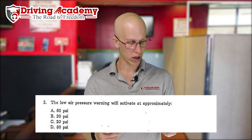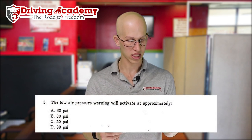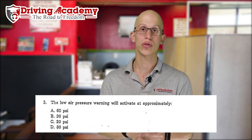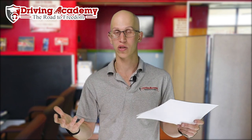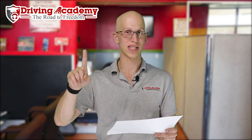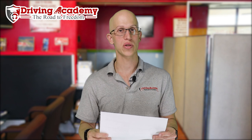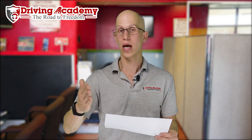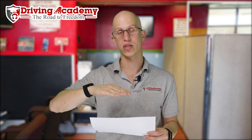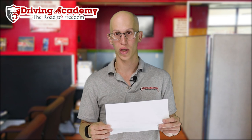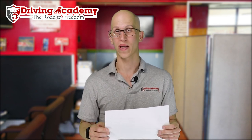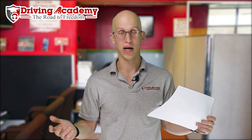Number three: the low air pressure warning will activate at approximately — the correct answer is A — 60 PSI. This is part of your in-cab inspection and air brake test to make sure your air brake system is working properly. Once your air pressure gets to 60 PSI, there's supposed to be a warning light and buzzer telling you you're getting low on air. If you get too low, your brakes are going to lock up and you cannot move — and when you have 80,000 pounds you're hauling and you can't move, you're going to cause a big traffic jam and you won't get paid.